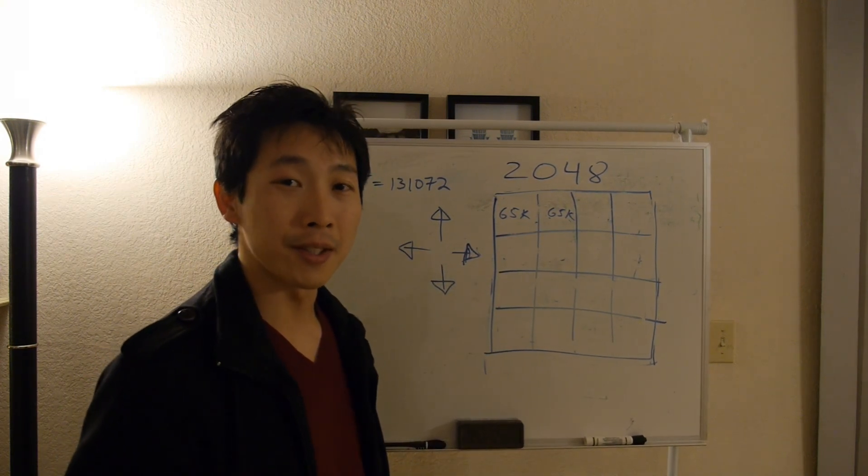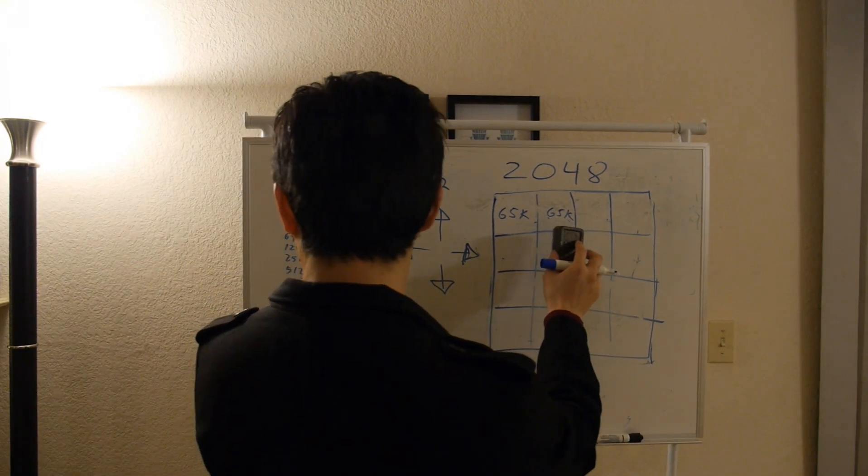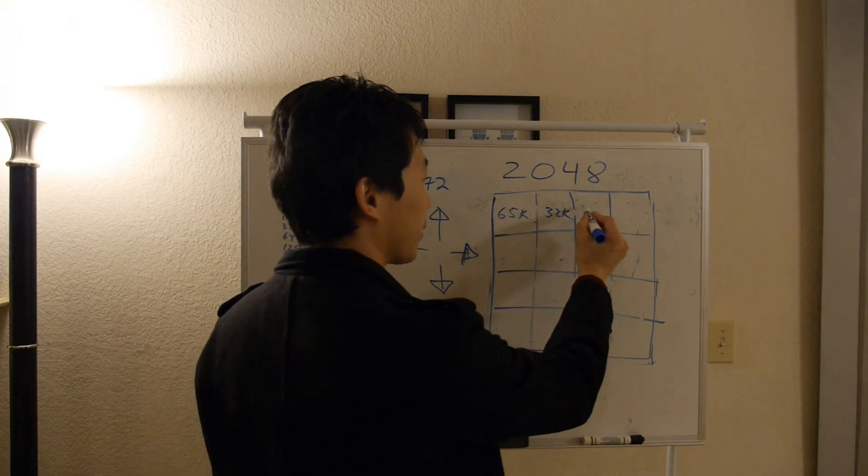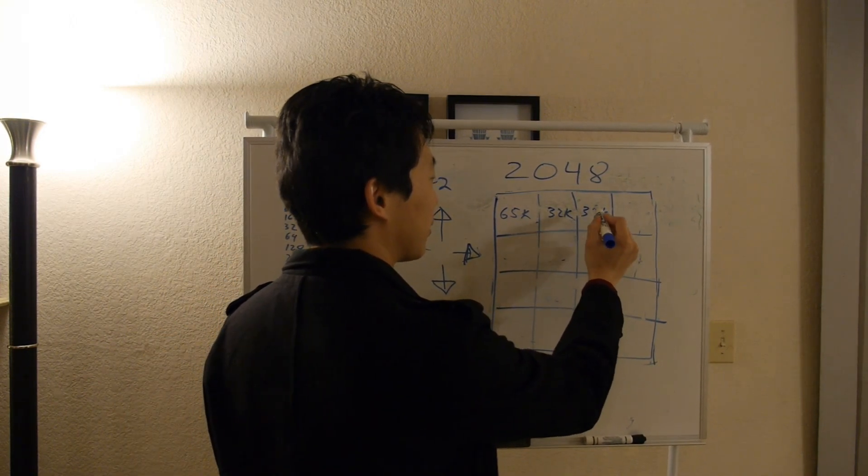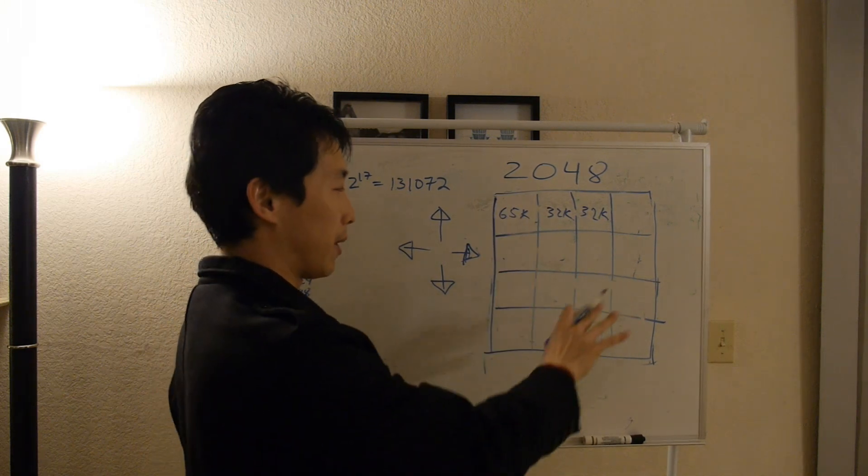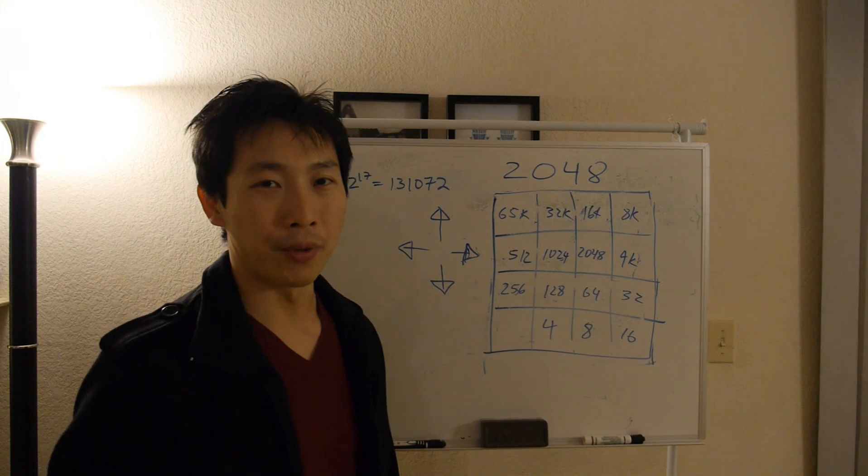So in order to get the 65k tile, we must have had the 32k tile. In order to get the 65 we had here, we needed a 32k. Okay, awesome. So we can keep on going, do this step on and on until we have what I was drawing before.